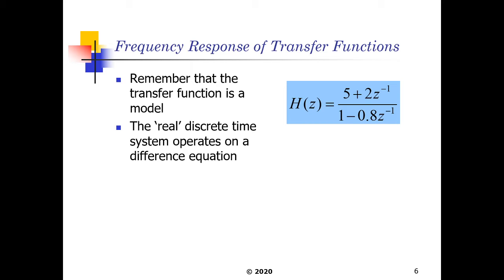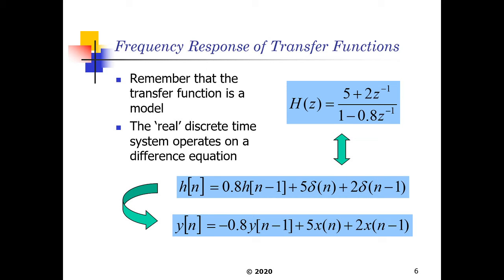So the transfer function here with respect to z is basically just a model, and the real discrete time system operates on a difference equation which can be mapped from the h of z equation here into h of n. And accordingly we can formulate a y of n equation here with respect to x of n. In particular, recall that y of z is basically h of z times x of z. This is what we do in the mapping from h of n to y of n.